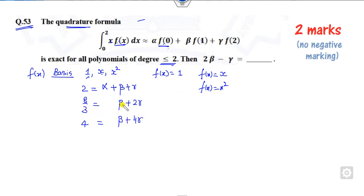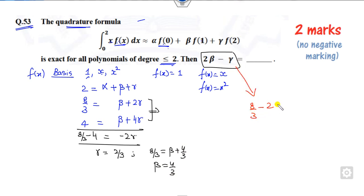Now you need beta and alpha. You have to solve these two equations by subtracting them. This is 8/3 minus 2γ. After solving you will get -8/3 divided by -2, so γ is 2/3. If you substitute in the first one, beta plus 4/3 equals 2, so β is 4/3. Therefore 2β minus γ is 8/3 minus 2/3. The right answer is 2.